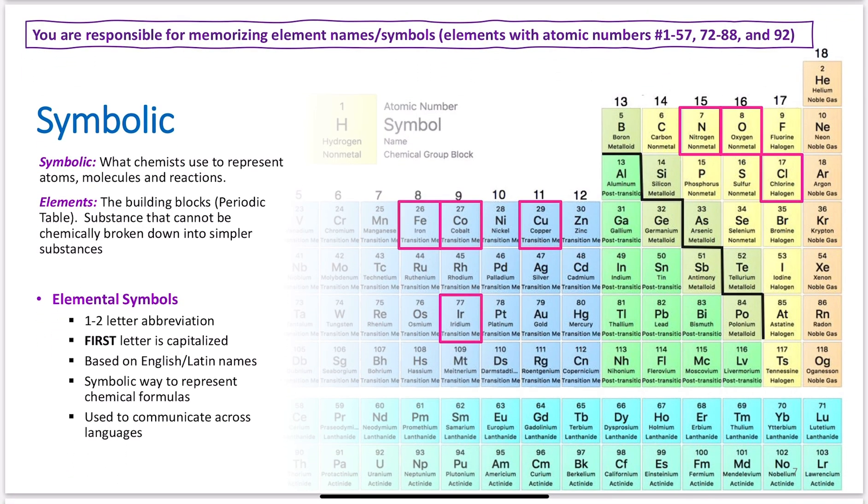Your symbolic perspective is what chemists use to present the atoms, molecules, and reactions. We have elements, and this is comprised of your periodic table. The elements are the building blocks. We find them on the periodic table. They are very nicely organized for us on this table. The elements themselves is a substance that cannot be chemically broken down into a simpler substance. If it is broken down, that's when we find protons, neutrons, electrons, and it no longer behaves as that species.